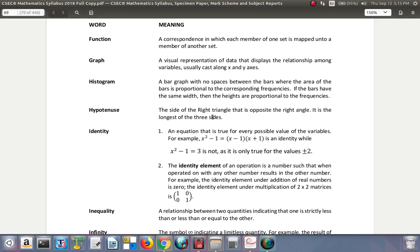Identity: an equation that is true for every possible value of the variable. For example, x² - 1 = (x - 1)(x + 1) is an identity. That means every value you put for x on this side, when you work it out, put the same value for x on this side, you will get the same answer all the time. x² - 1 = 3 is not an identity. It is an equation.